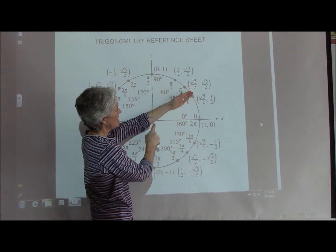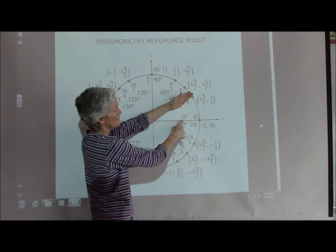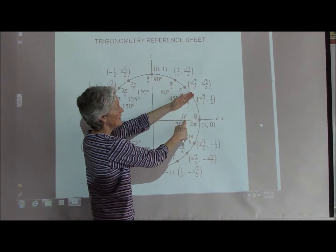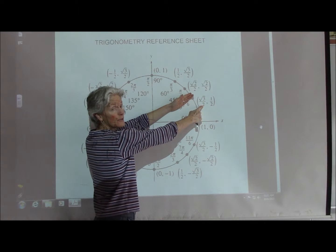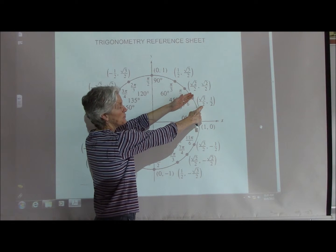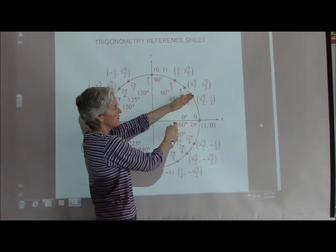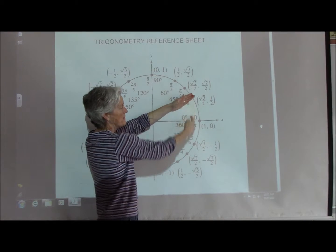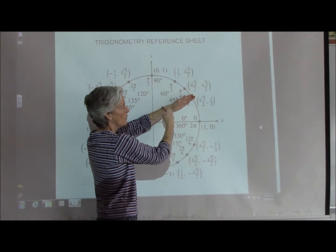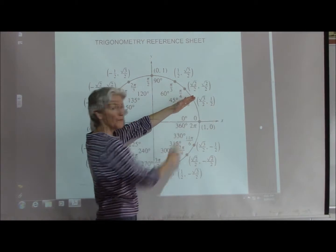So our cosine would be the adjacent, or the x over 1. Well, the x value, of course, is right there. So the cosine of 30 degrees is the square root of 3 over 2. The sine of 30 degrees is the opposite, or the y over 1. Oh, there's my y coordinate right there, 1 half.